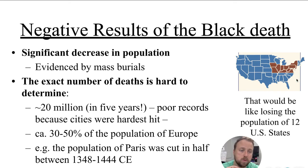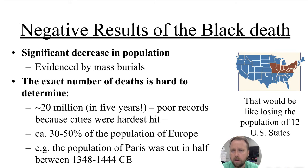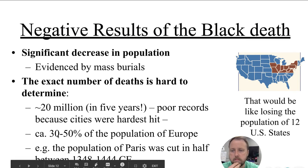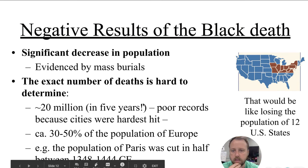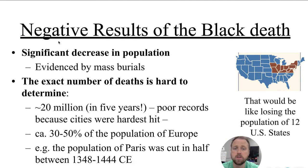To understand what 20 million looks like — looking at the United States, it's like all the people in these 12 states: Kentucky, West Virginia, Virginia, Pennsylvania, New York, Indiana, Illinois, and others — all dying. It was a huge number, and obviously this echoes what we're living through right now with COVID-19, though obviously a very different illness and we're not seeing 20 million dying worldwide.